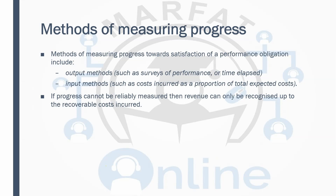Now we'll talk about construction contracts. In construction contracts there are two terms: the output method and the input method. Construction contracts are long-term contracts — for example, constructing a building taking two years, a bridge taking three years, or a stadium taking four years. How should revenue for those contracts be recorded? Recording it immediately is incorrect. Splitting it equally over the years is also incorrect because you may not have done equal work each year. Recording it only at the end is also incorrect.